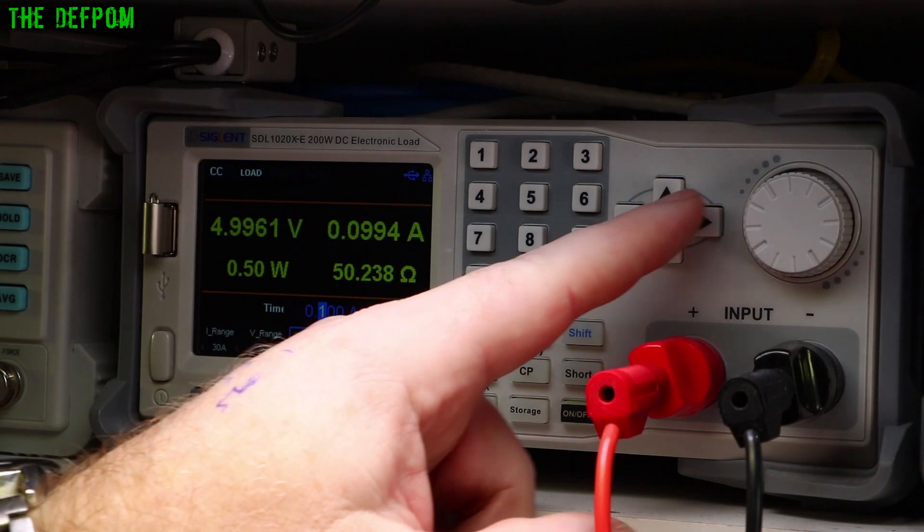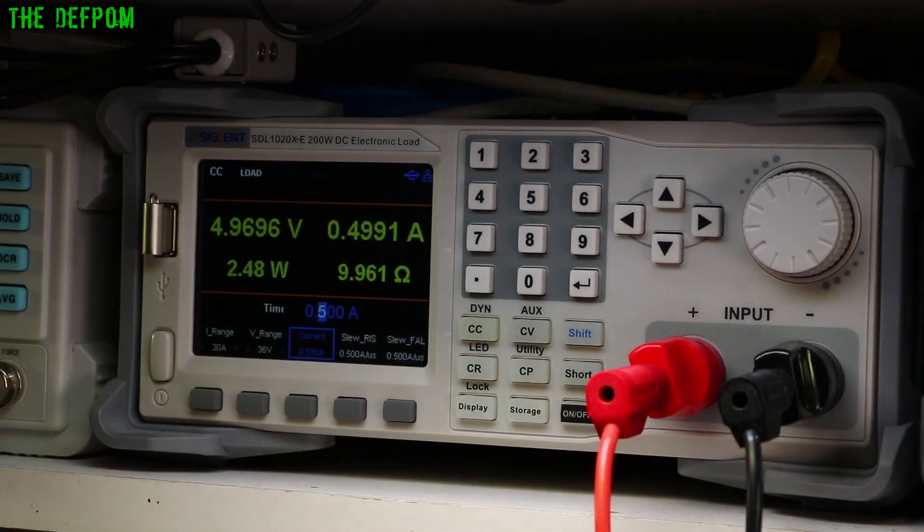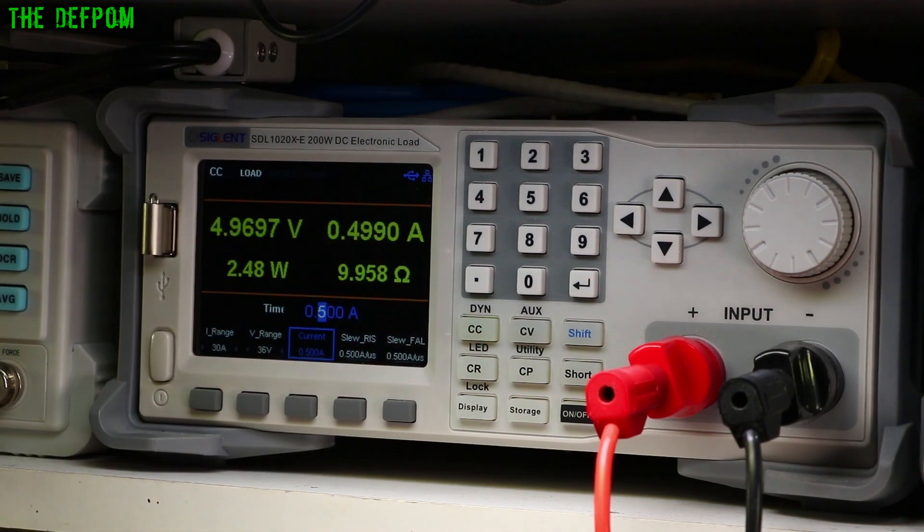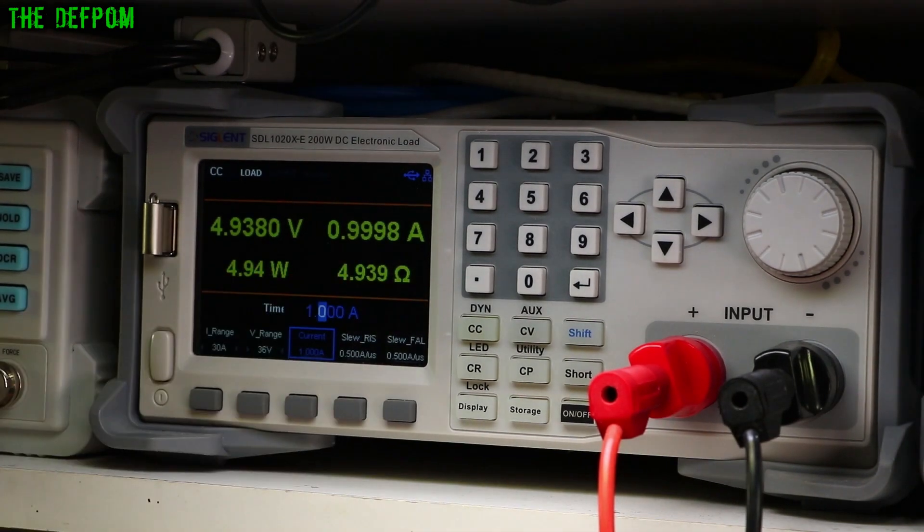If I come over here, if I want 500 milliamps, there we go. I haven't changed the power supply. Current has changed. I can go up a bit more. There you go. One amp. Let's draw one amp.